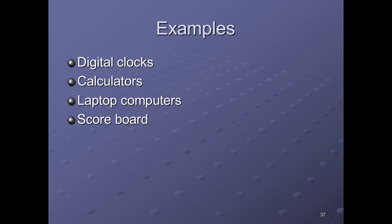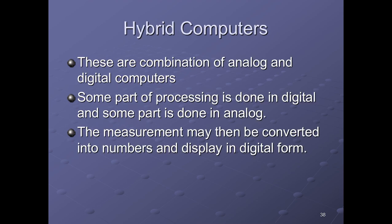Hybrid computers are a combination of analog and digital computers, taking good features from both. Some parts of the processing are done digitally and some parts are done in analog. The measurement may then be converted into numbers and displayed in digital form. Examples include patient heart function monitors, temperature monitors, and blood pressure monitors.